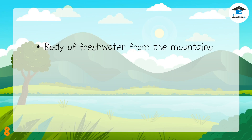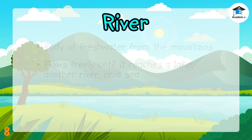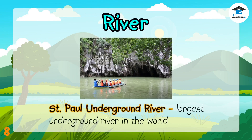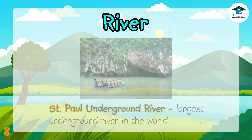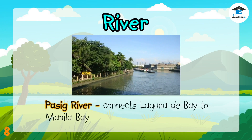Water from the mountains flows into this body of freshwater. It flows freely until it reaches a lake, another river, or a sea. Many kinds of freshwater fish also live here. What waterform is this? Right, it is a river! The Saint Paul Underground River in Puerto Princesa, Palawan is the longest underground river in the world. The Cagayan River in Cagayan Valley is the longest and largest river in the Philippines. The Pasig River connects Laguna de Bay to Manila Bay.